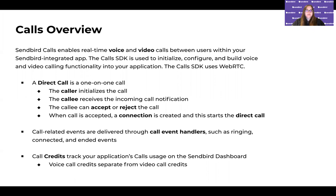A big thing to focus on is a direct call — this is that one-on-one call between two users. The caller is the one that initiates the call, whoever dials that outbound call. And the callee is the receiver of that incoming call. They will receive a notification about the incoming call either through an event handler or through an actual notification if they're outside the app. The callee can either choose to accept or reject that call, just like any standard call. If that call is accepted, a connection is created, and that starts the direct call.